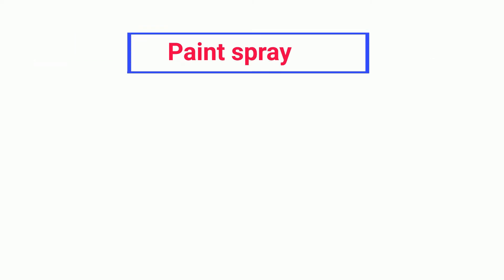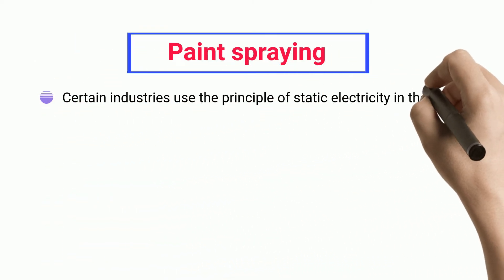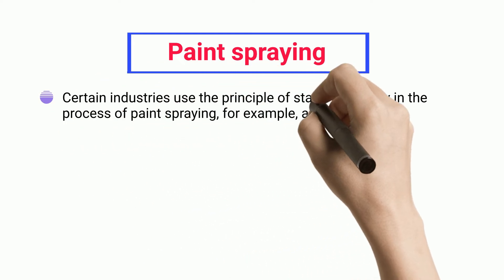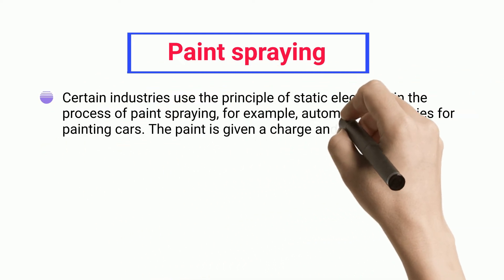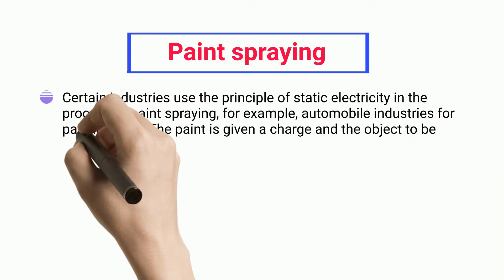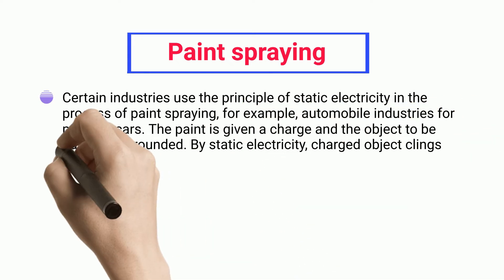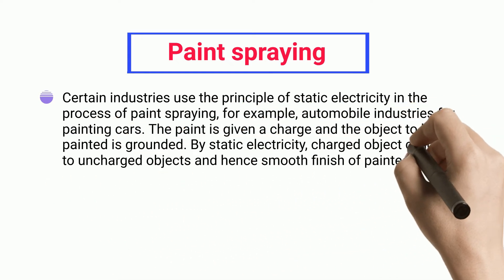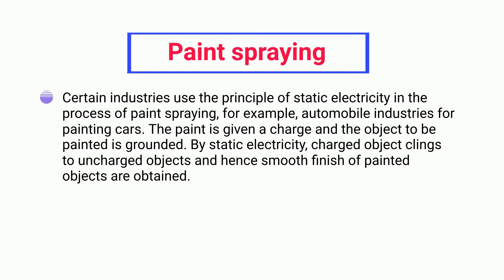Certain industries use the principle of static electricity in the process of paint spraying, for example, automobile industries for painting cars. The paint is given a charge and the object to be painted is grounded. By static electricity, charged objects cling to uncharged objects, and hence a smooth finish of painted objects is obtained.